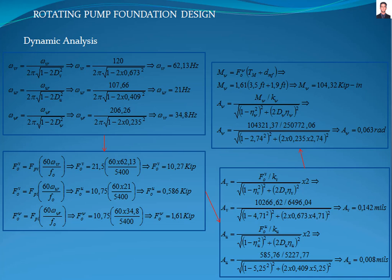The next step is to calculate the peak-to-peak amplitude with equation 5.8.1J of the American Concrete Institute 351.3R standard. This step is solved in parts. First, we calculate the peak-to-peak amplitude for vertical and horizontal cases, where KV and KU are the soil spring stiffness, DV and DU are the damping ratios, and eta-V and eta-U are the tuning ratios for vertical and horizontal cases. The vertical peak-to-peak amplitude is 0.142 mils, and the horizontal amplitude is 0.008 mils.